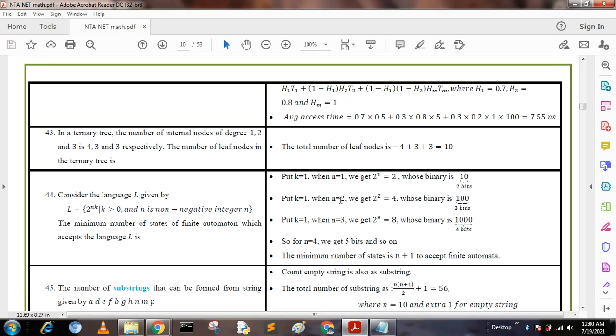Again put k = 1 and n = 3, we get 2^3 = 8 whose binary is 1000, that is 4 bits. So for n = 4, put n = 4 and k = 1, we get 5 bits, and so on. The minimum number of states is n + 1 to accept finite automata.